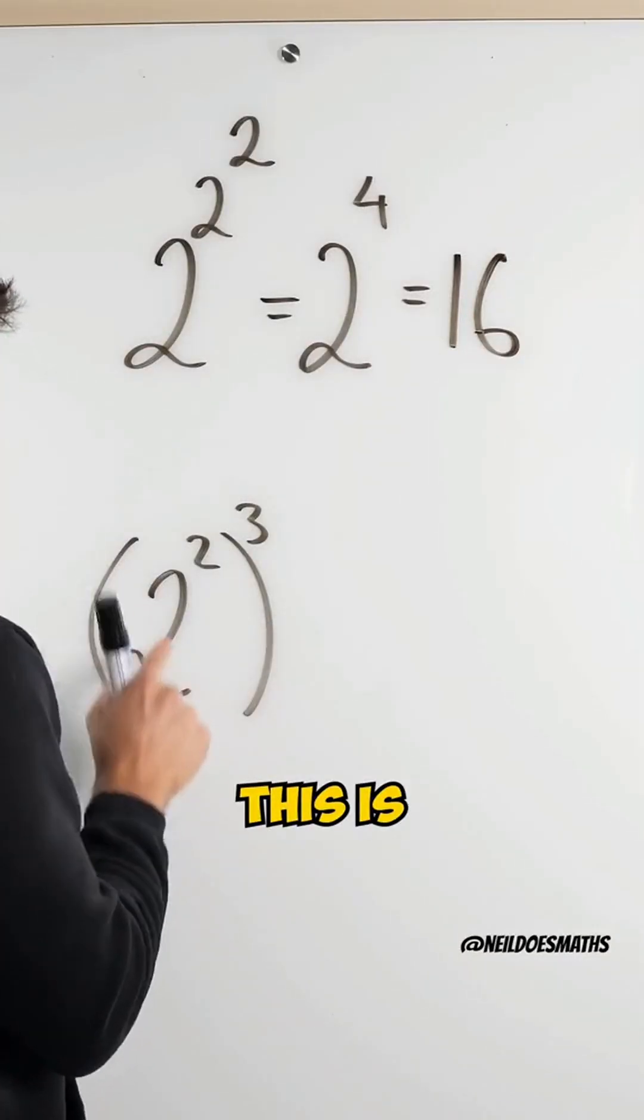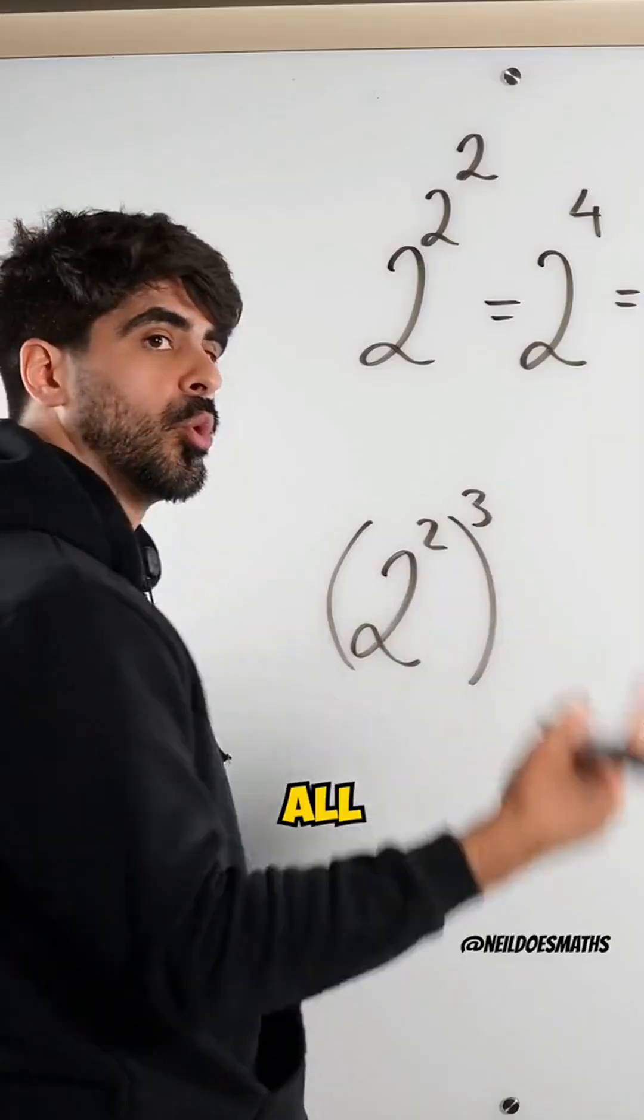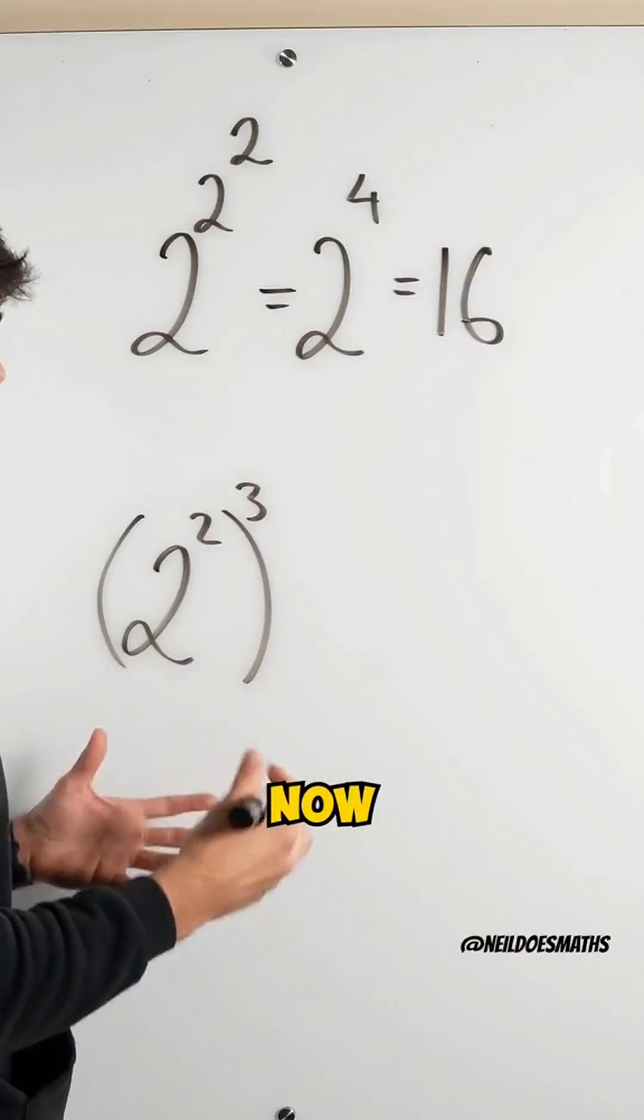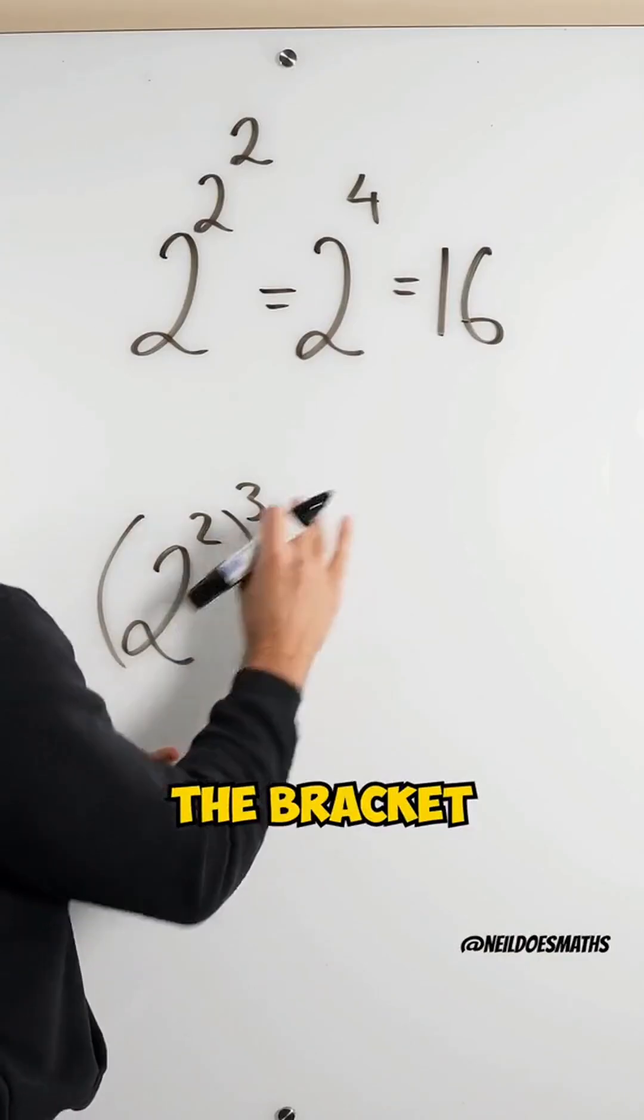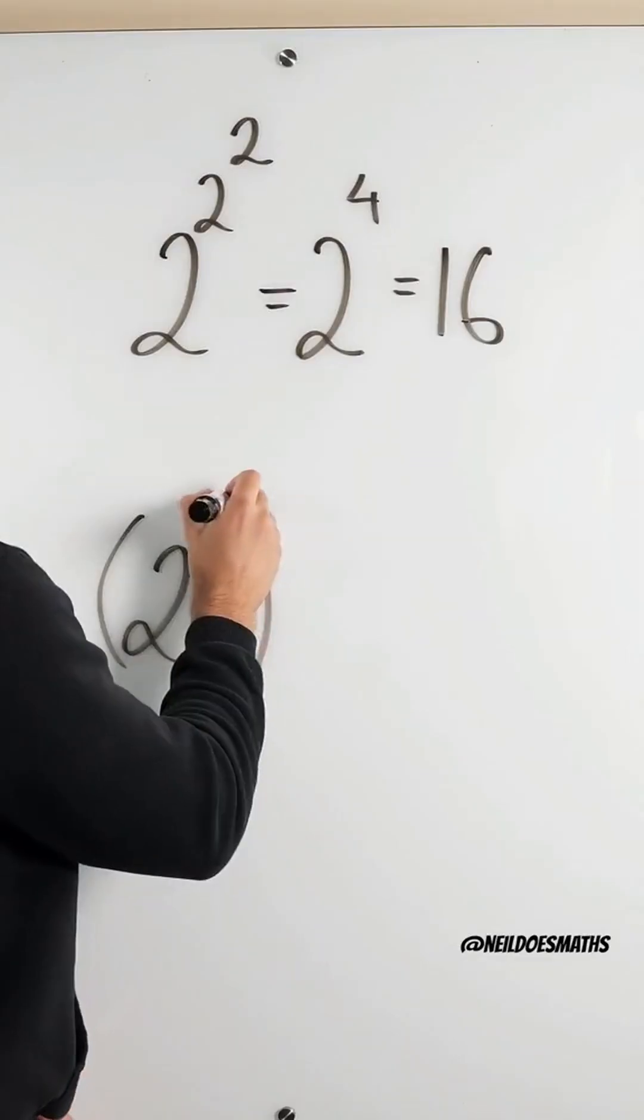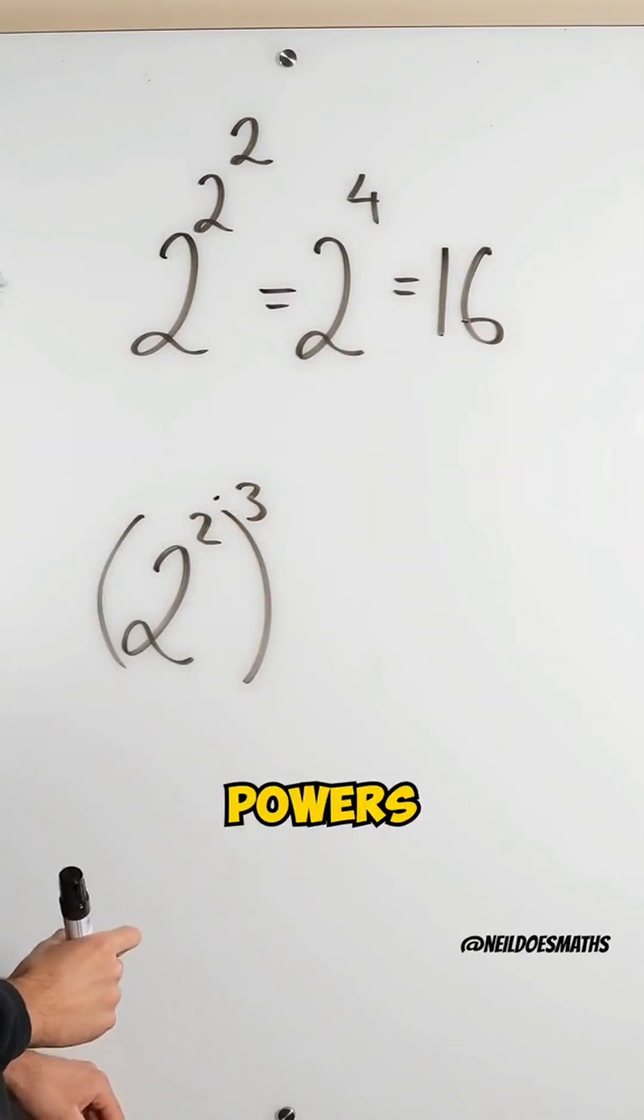This is two squared all cubed. Now you can either work out two squared, address what's inside the bracket and then cube it, or we can use our index rules where we multiply those powers.